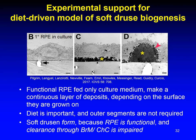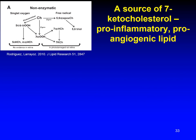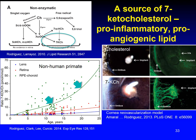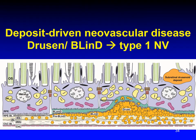This shows that soft drusen form because the RPE is functional and clearance through the Bruch's membrane-choriocapillaris is impaired. One modified lipid that could contribute to inflammation and neovascularization is 7-ketocholesterol. This oxysterol can form from unesterified cholesterol by enzymatic or non-enzymatic means through the action of free radicals. Ignacio Rodriguez's lab showed that in non-human primate eyes, RPE choroid — but not the lens or retina — accumulates 7-ketocholesterol with age. This compound was also shown to be pro-angiogenic in vivo using a corneal micro-implant assay.